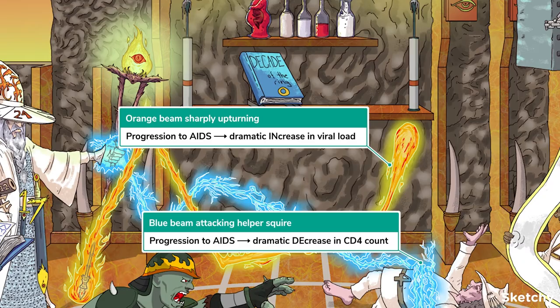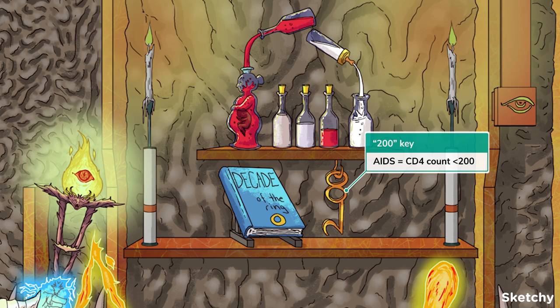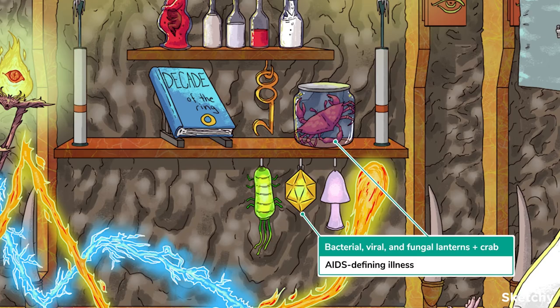By this point, the CD4 count is starting to tank, and the viral load starts to drastically increase. The virus has depleted the host CD4 cells so much that the immune system can no longer fight off the infection — the body is in an immunocompromised state known as AIDS. There are two ways to diagnose AIDS: the first is a CD4 count below 200, which by definition is AIDS. The presence of an AIDS-defining illness is the second way, though these tend to start occurring around a CD4 count of 200, but not necessarily below 200.